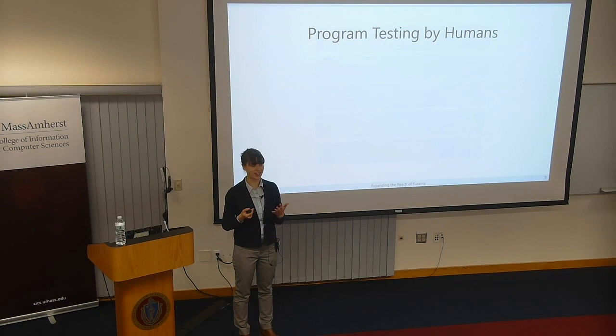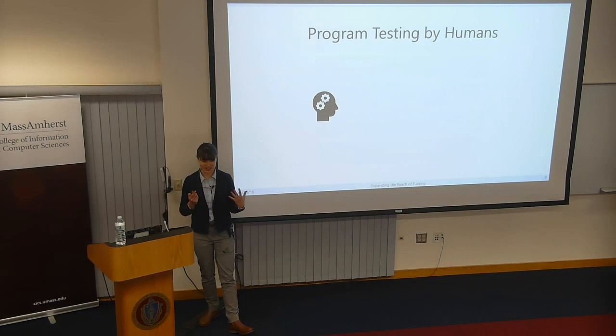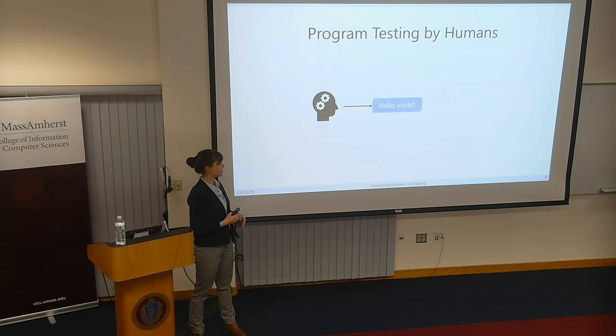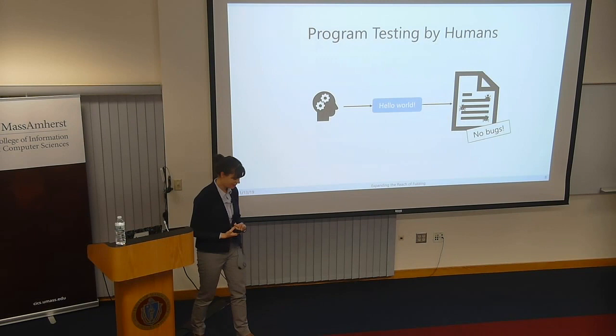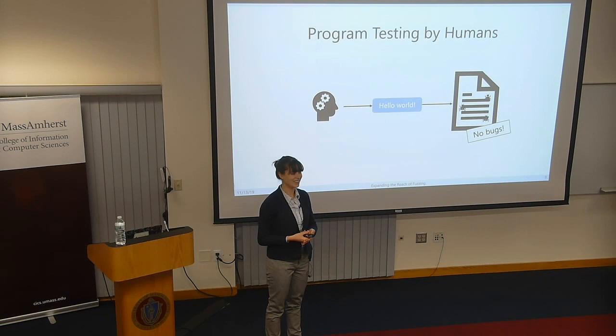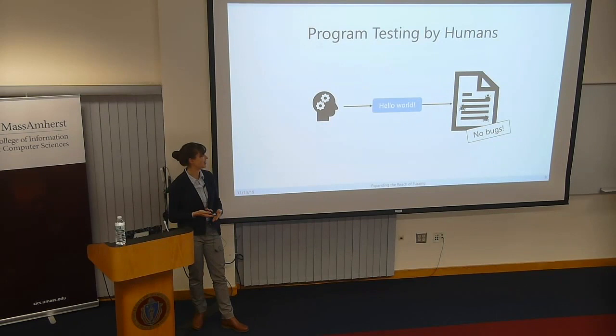If you think about how humans test software, the ideal way is: you think very carefully and come up with some inputs to your program. If you've done this task correctly, you run your program on those inputs and no bugs show up, giving you some trust that there are no bugs in your software. But beyond humans being bad and inserting bugs into software, they can also not be very good at coming up with a suite of inputs that actually assures your program isn't buggy.